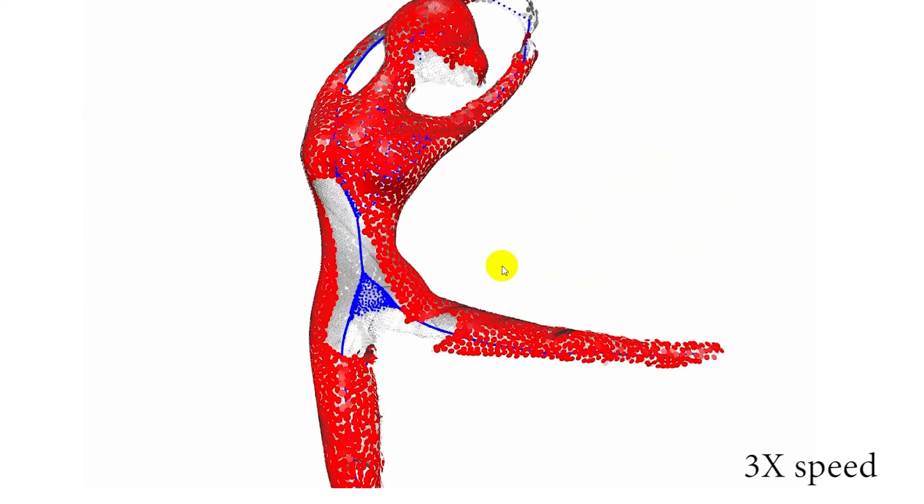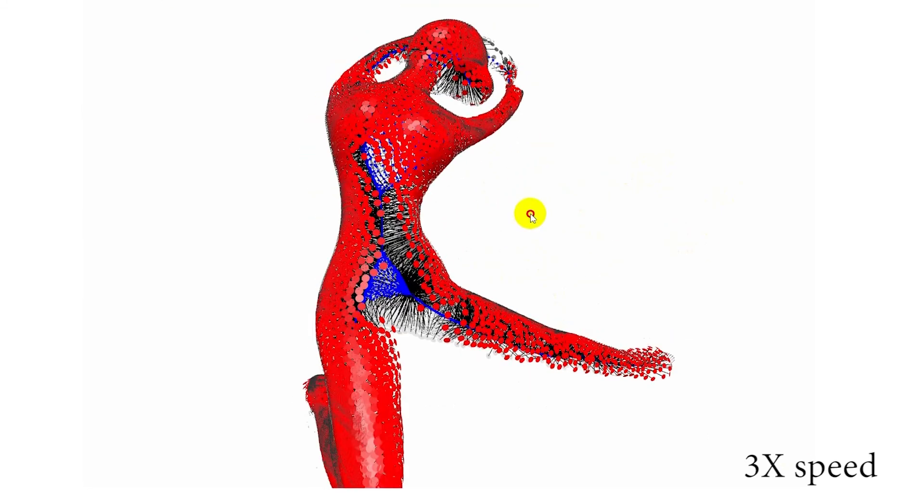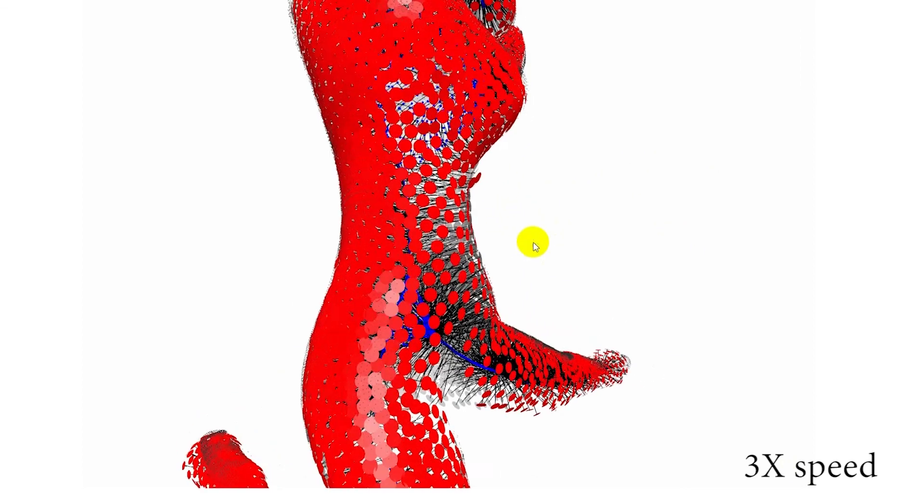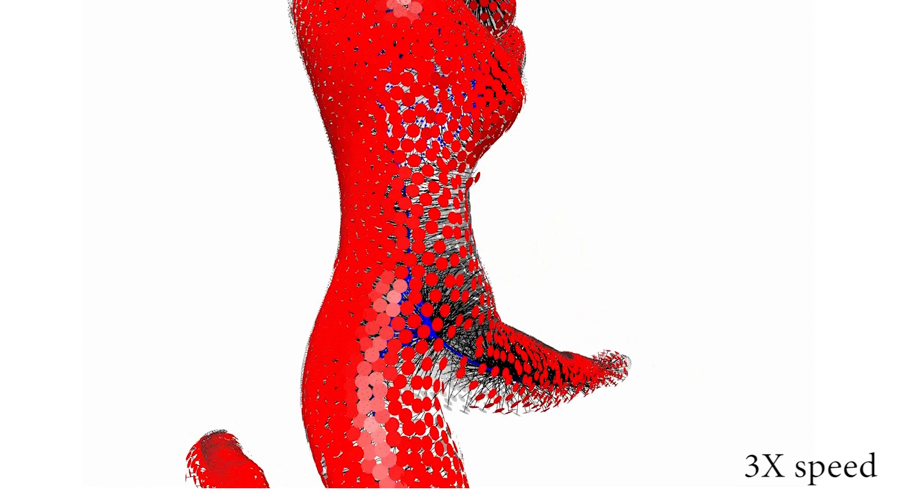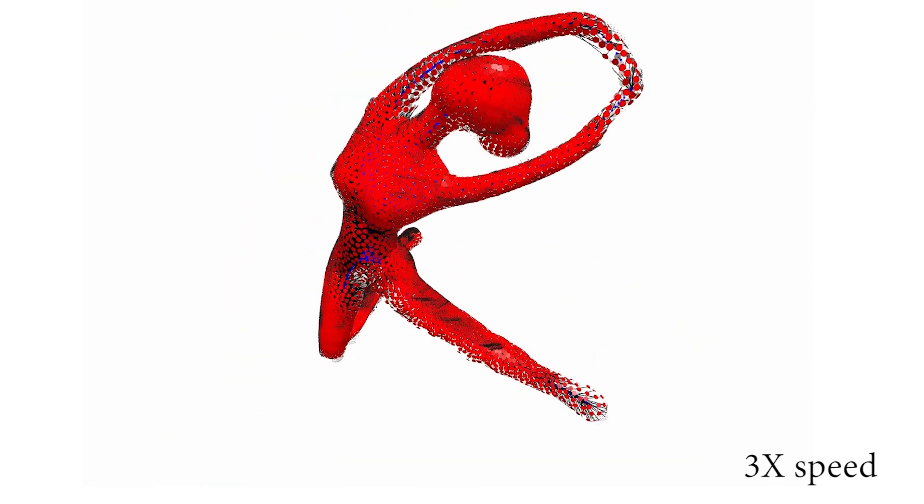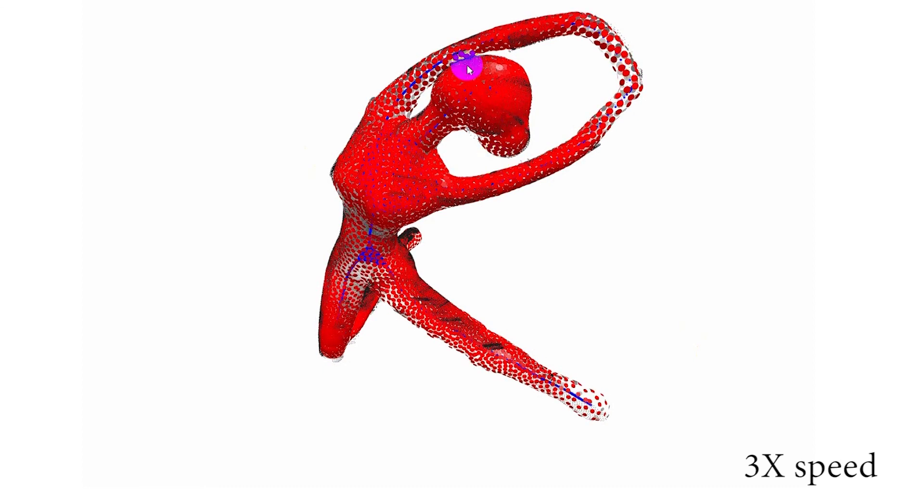As you can see from this live demo, the completion of the surface by our technique is intuitive since it follows a coherent mesoskeleton. Our completion respects the shape context by extrapolating the existing surface guided by the mesoskeletons, rather than completing the surface with context-oblivious data.